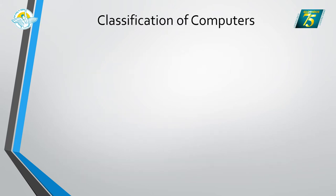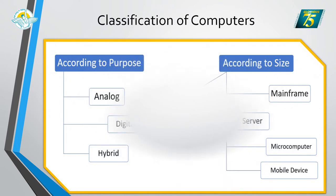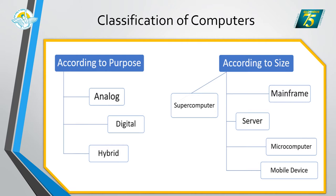Computers can be classified into two types: one, according to purpose, and second, according to size. According to purpose, there are three types: analog, digital, and hybrid. According to size, there are five types: supercomputer, mainframe, server, microcomputer, and mobile device.